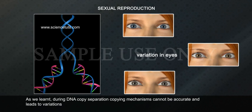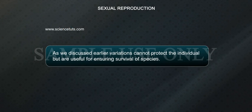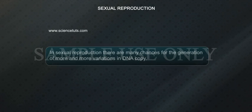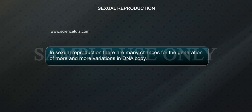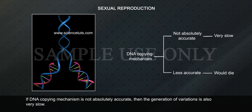As we learnt, during DNA copy separation, copying mechanisms cannot be accurate and leads to variations. As we discussed earlier, variations cannot protect the individual but are useful for ensuring survival of species. In sexual reproduction, there are many chances for generating more and more variations in DNA copy. If the DNA copying mechanism is not absolutely accurate, then the generation of variations is also very slow.